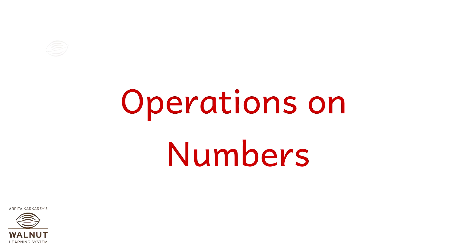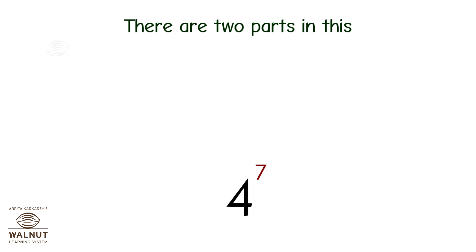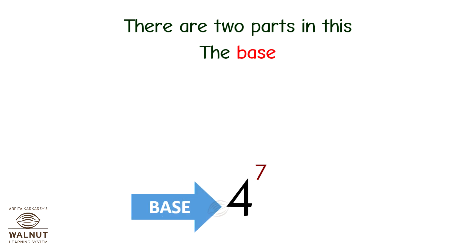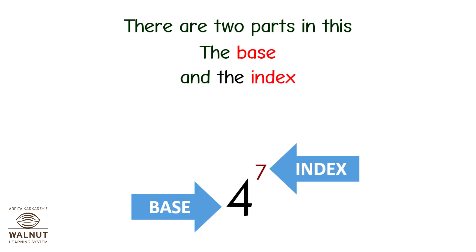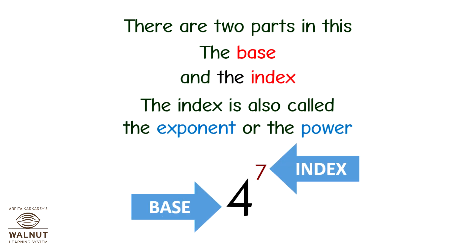Operations on Numbers: Indices. Consider 4 raised to 7 — there are two parts in this: the base and the index. The index is also called the exponent or the power.